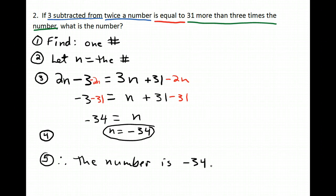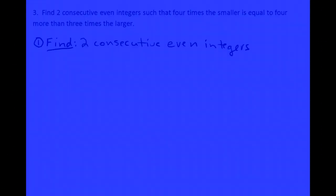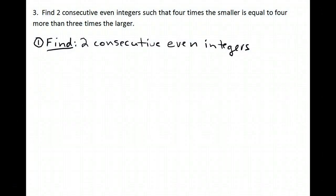Alright. Here's our next problem. Find two consecutive even integers such that four times the smaller is equal to four more than three times the larger. Alright. Now, if you're trying to find consecutive even integers, that would be like 8, 10, 12, 14, and so forth. Those are consecutive even integers. Consecutive odd integers would be 9, 11, 13, 15, and so forth.